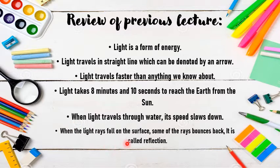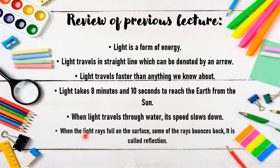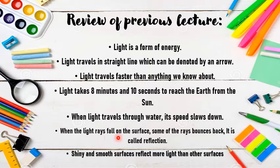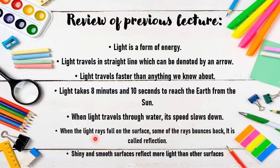We learnt that when light rays fall on a surface, some of the rays bounce back and this is called reflection. When you stand in front of the mirror, what you see is your image — that is actually the reflection. Shiny and smooth surfaces reflect more light than other surfaces. A mirror is a smooth and shiny surface, which is why it reflects light much more so we can see our image very well.